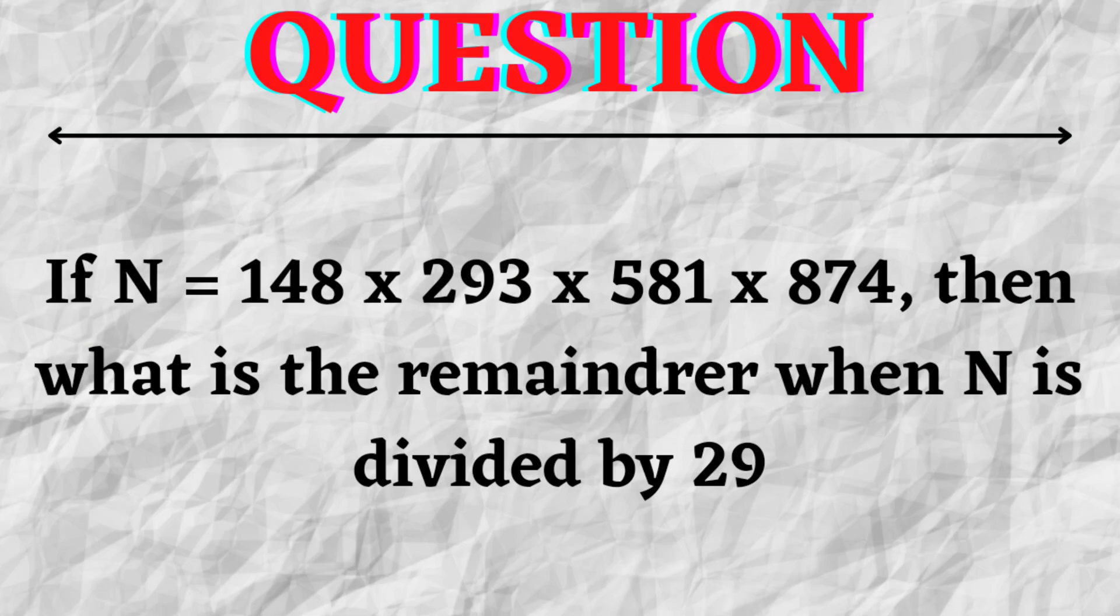The first question says that if n is equal to 148 into 293 into 581 into 874, what will be the remainder when n is divided by 29? We are given five options: 7, 6, 5, 9, and none of these.